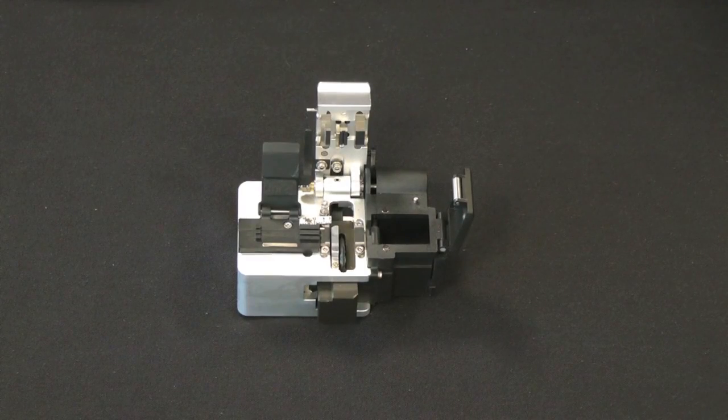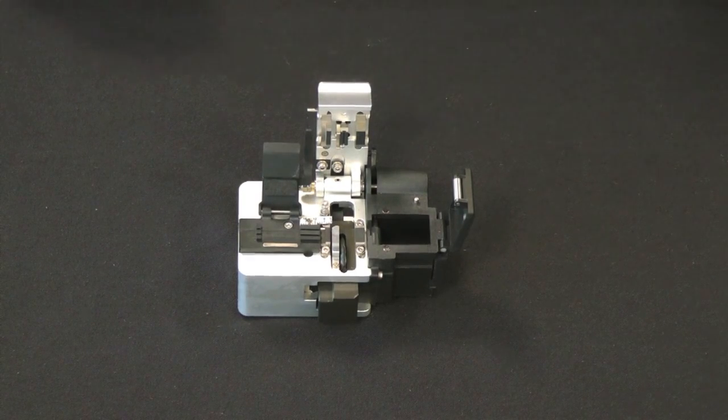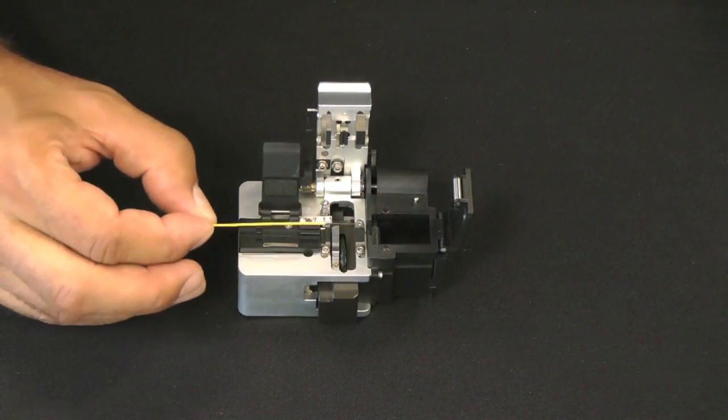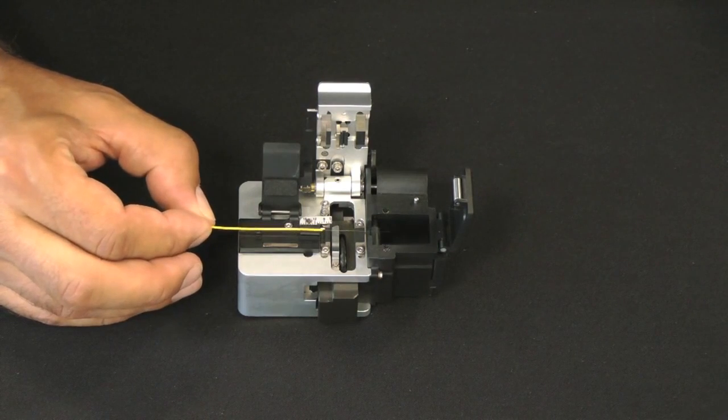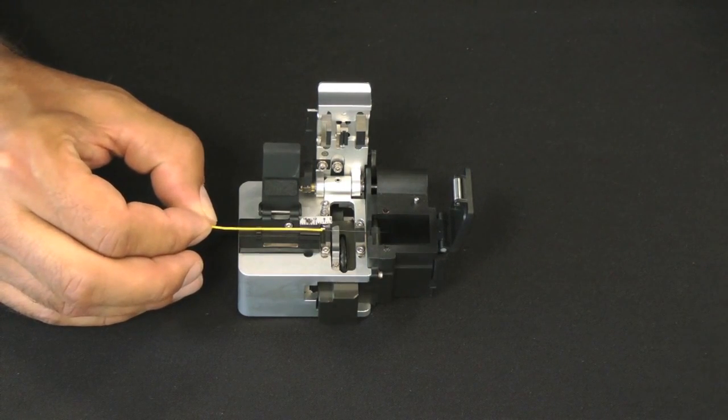Next, we are ready to use the rotary precision cleaver. Take the prepared fiber and place it into the 900 micron guide slot, the larger of the two. The end of the buffer should be placed at the 10 millimeter mark on the cleaver.